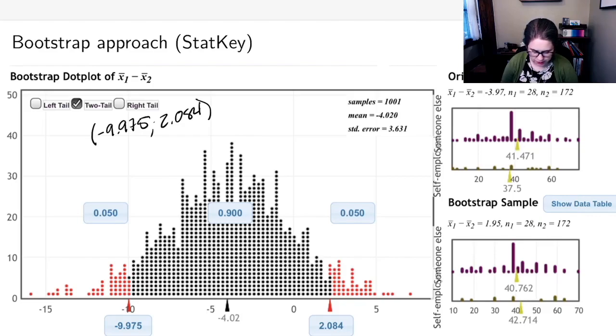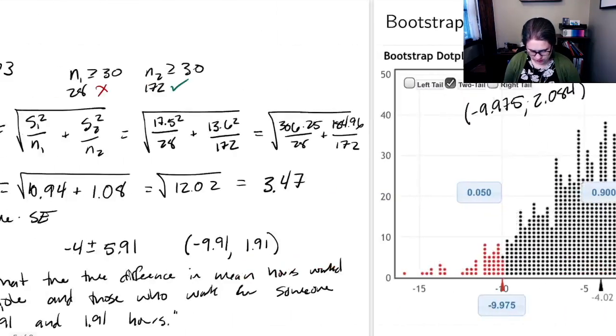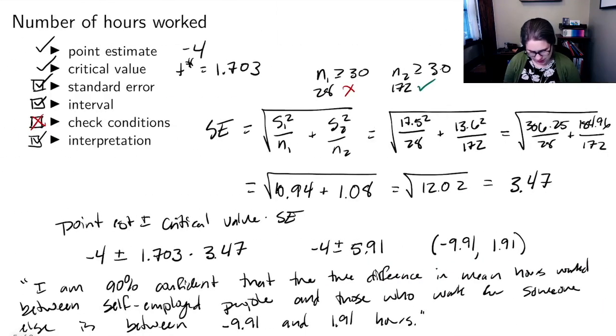There might be a question on the homework asking you to compare the standard error from the bootstrap, in this case 3.631, with the standard error from the formula, which was 3.47.